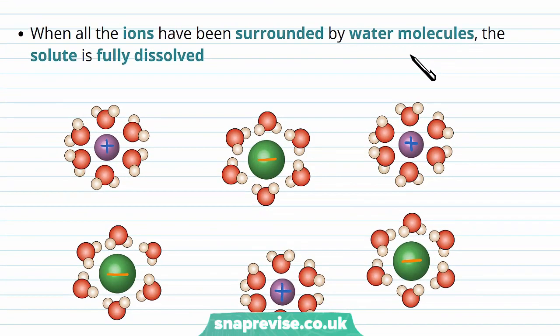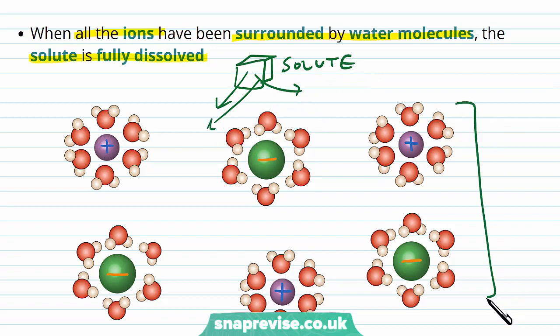Eventually, all of the ions from the ionic lattice will be dissolved, and each surrounded by water molecules. When they're all in this state, the solute has been fully dissolved. The solute was initially that ionic lattice, and now every single ion has been surrounded by water. So now we have a solution, where water is acting as the solvent.